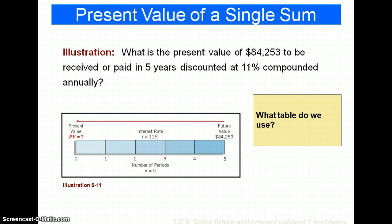Okay, so let's look at this example here. Let's say that we know five years in the future, we're going to have an amount of $84,253. What we want to know is, how much is that worth in today's dollars? Assuming it's going to be five years, and the interest rate is 11% per year. So which table do we use?